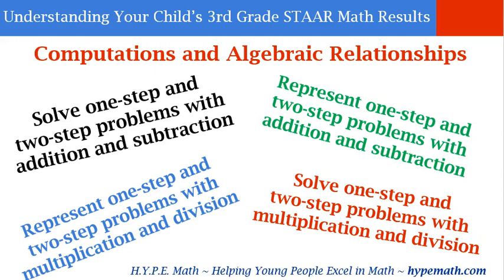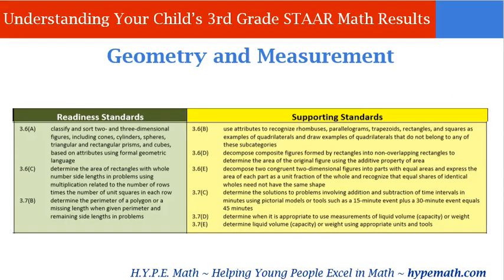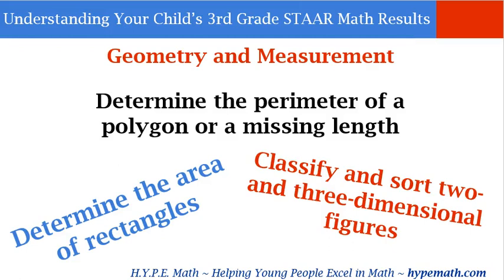The next category is Geometry and Measurement, again with readiness and supporting standards broken down. The charts I'm showing will be available to download so you can see all readiness and supporting standards for each category. A brief overview of the readiness standards includes: determine the perimeter of a polygon or a missing length, classify and sort two- and three-dimensional figures, and determine the area of rectangles.